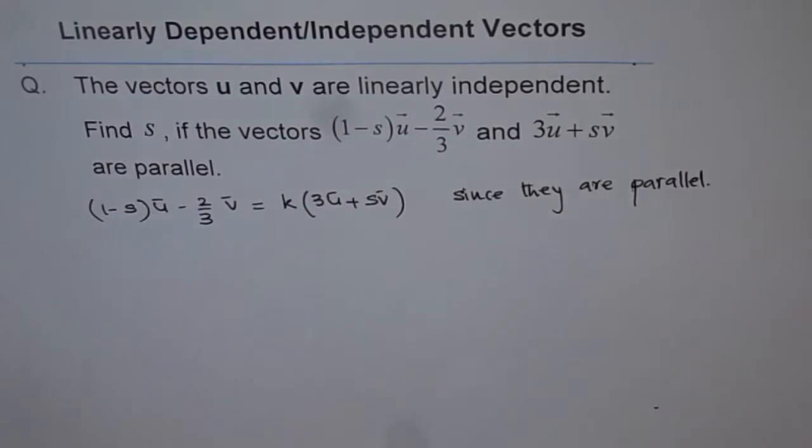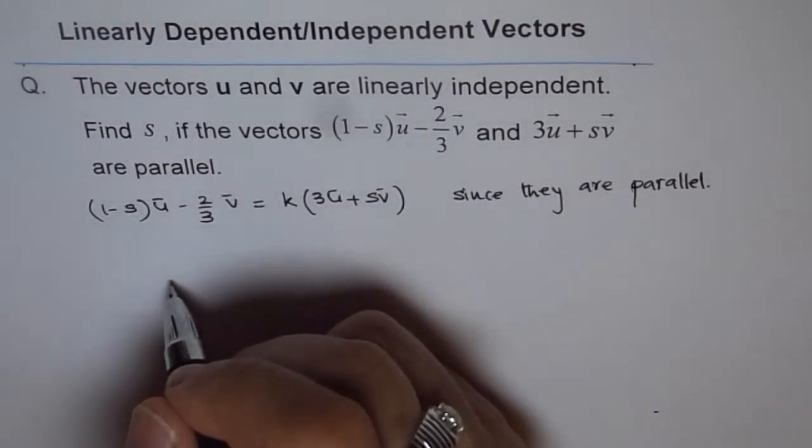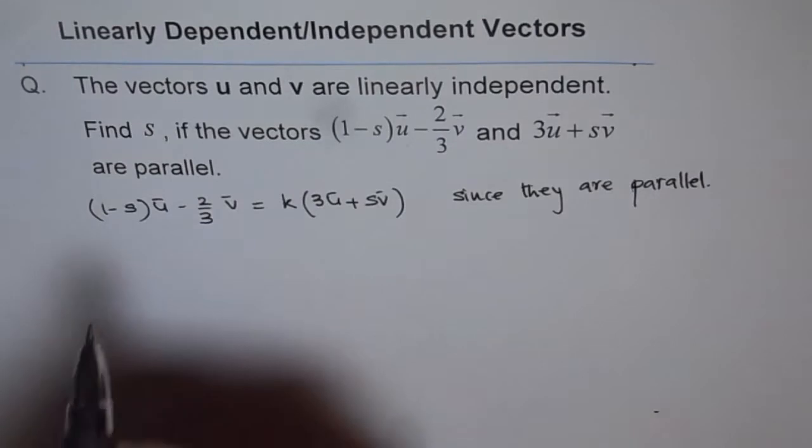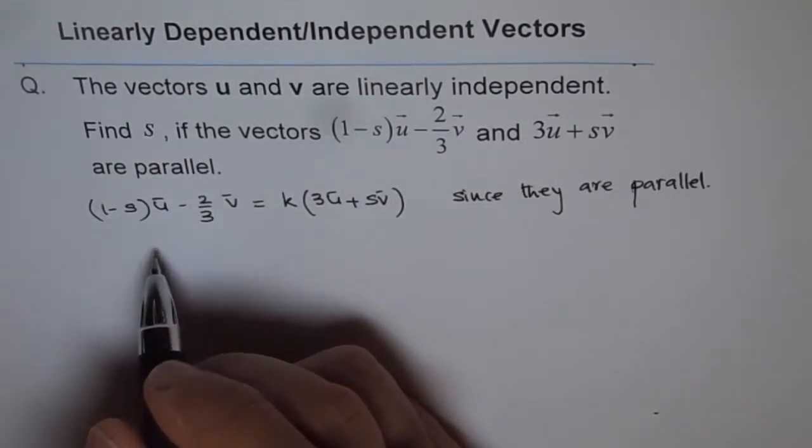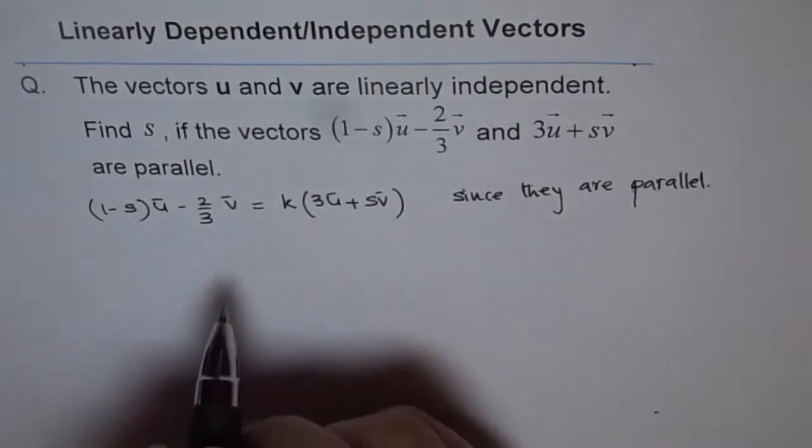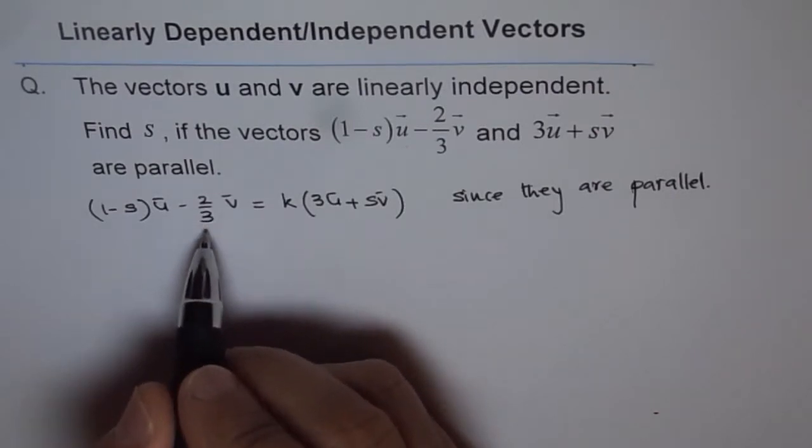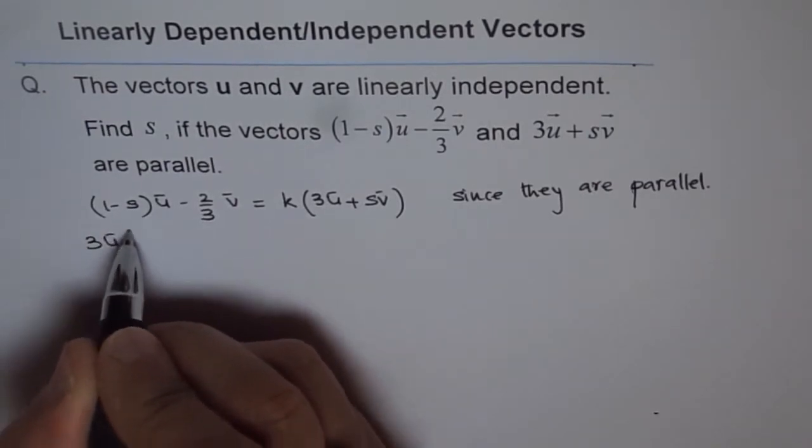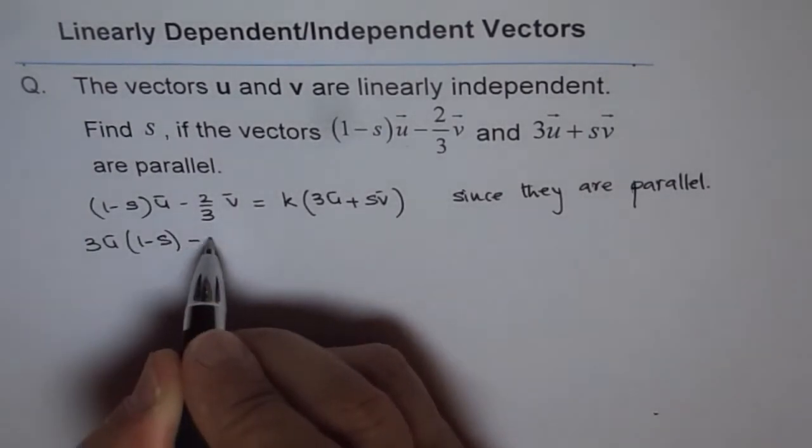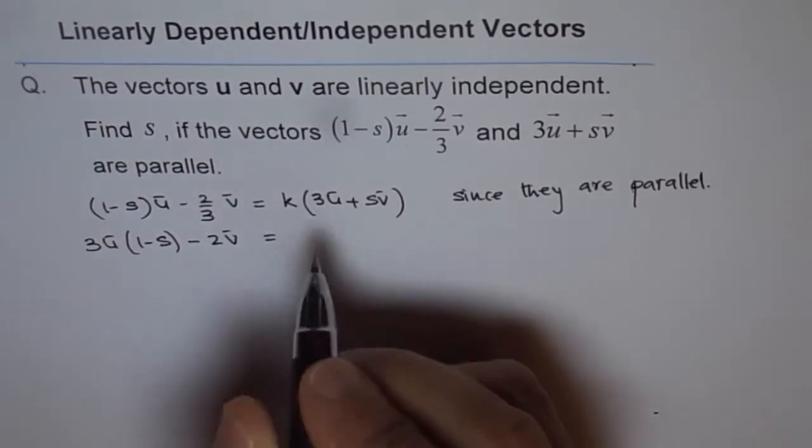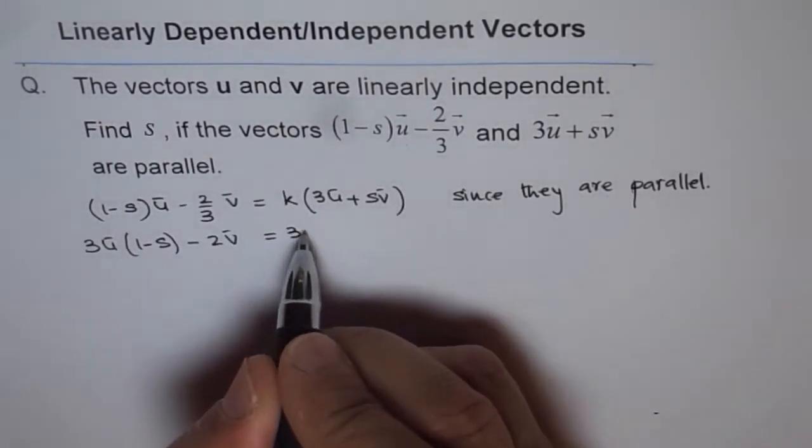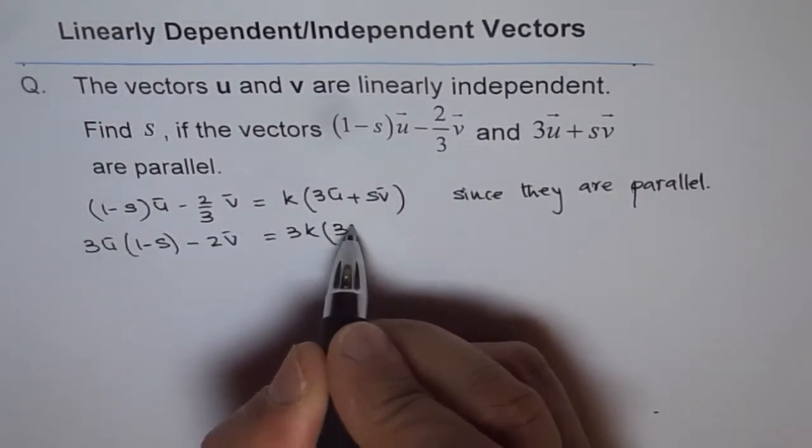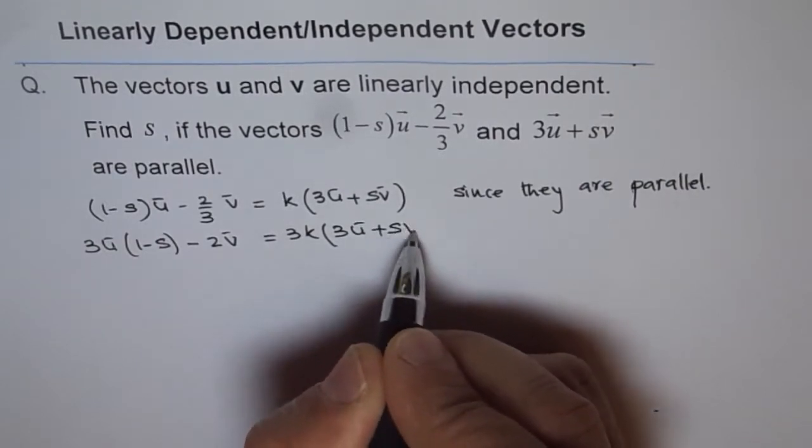Now, let's solve and rearrange the terms u and v. When we solve for this, better is to get rid of this fraction. So, let's multiply by 3 first. So, we get 3(1-s)u - 2v equals to 3k(3u + sv).